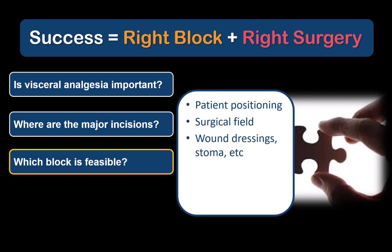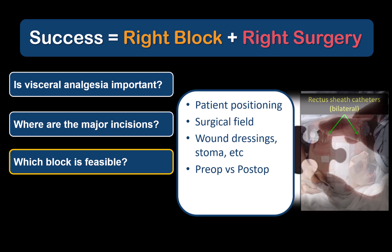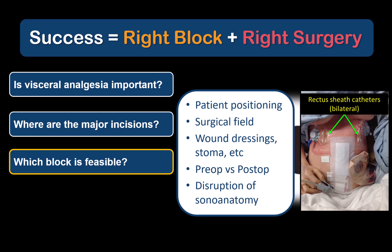We must also consider the extent of the surgical field and associated dressings, as well as the proposed timing of the block. If inserting catheters preoperatively, they need to stay out of the surgical field. For a single injection block, you could do it preoperatively to maximize perioperative opioid sparing, or alternatively at the end of surgery, sacrificing the intraoperative benefit to maximize postoperative analgesic duration. If performing the block postoperatively, consider the ability to position the patient before or after emergence, obstacles such as stoma sites and wound dressings, and the possibility that surgical dissection may have disrupted the target fascial planes with air, blood, or other fluid.